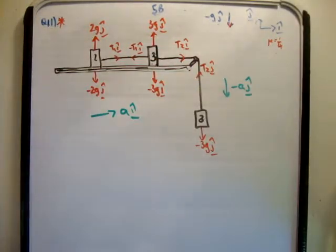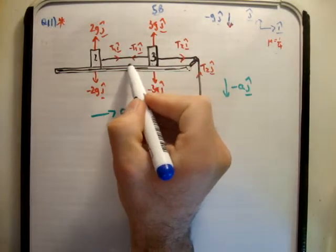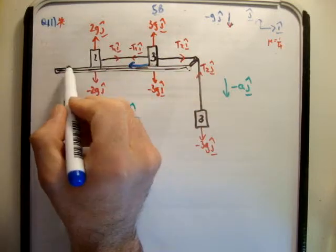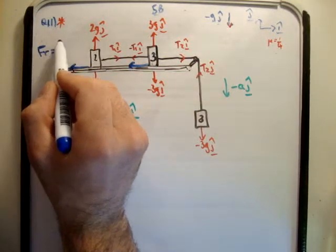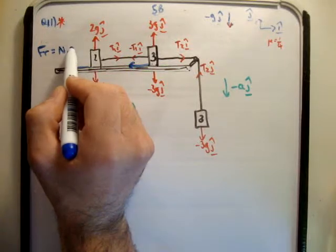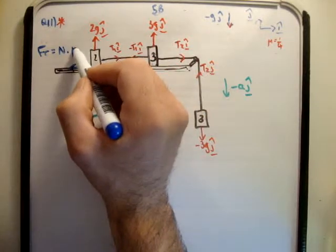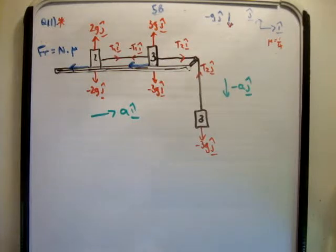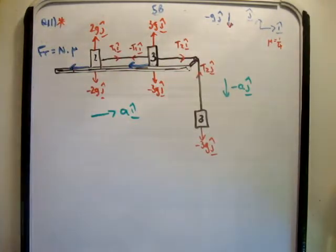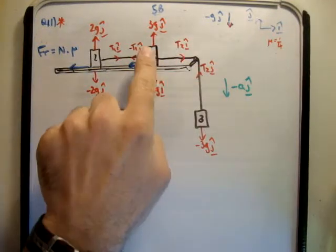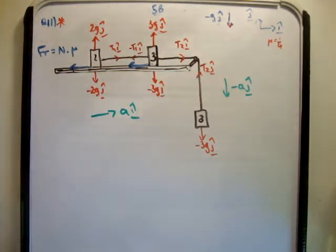Now, finally, we're going to look at our frictional forces, and these are going to oppose the motion. So they're going to go both in the negative i direction. And we should know at this stage that the friction is equal to the normal force times the coefficient of friction. So, in the case of the 2 kilo mass, it's going to be 2g times a quarter, which is equal to g over 2. And for the 3 kilo mass, it's going to be 3g times a quarter, which is 3g over 4.